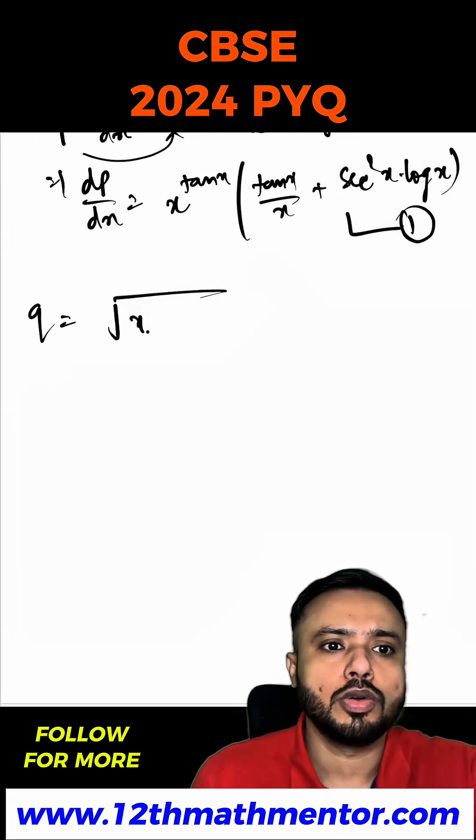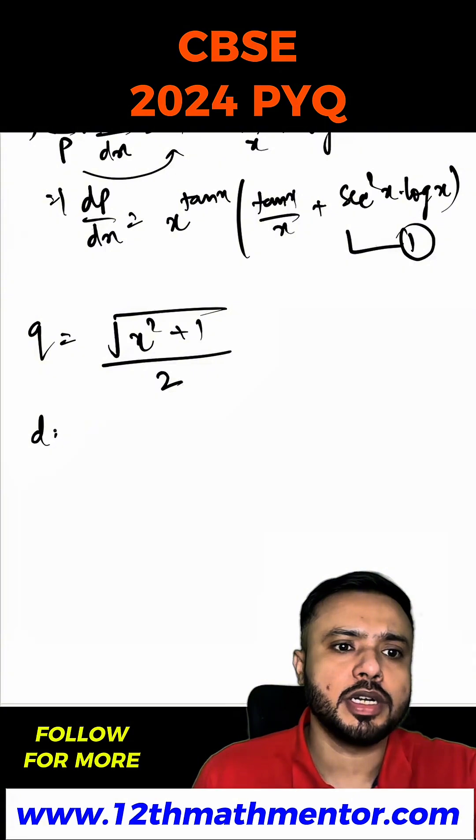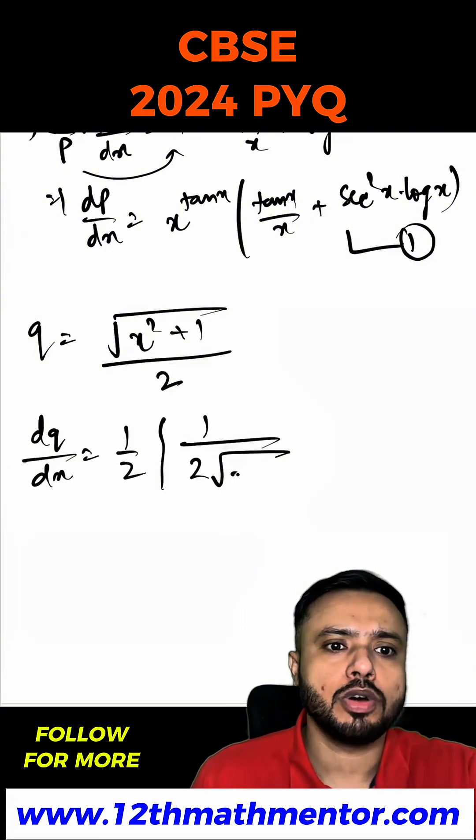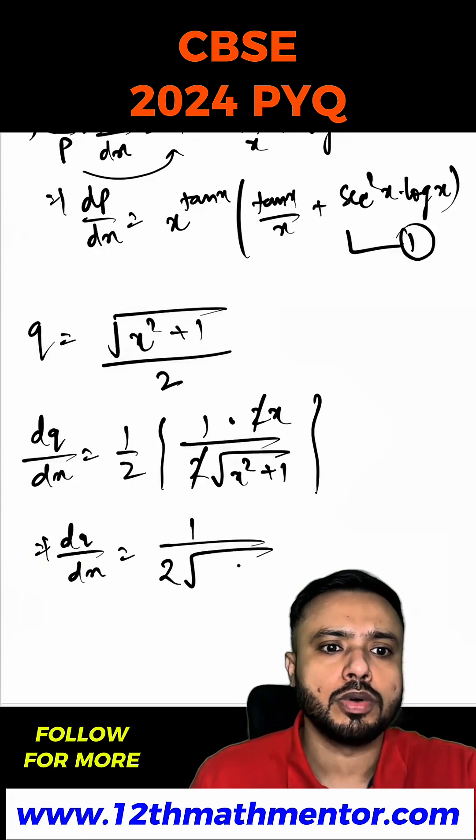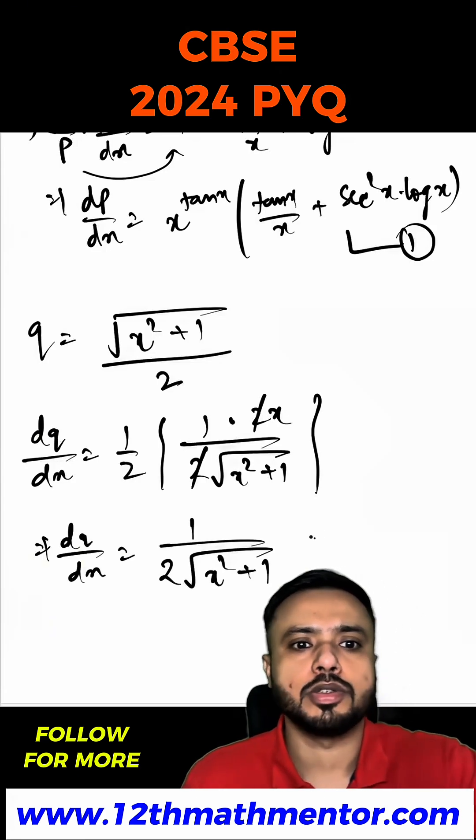Now my q was √(x² + 1)/2. We can directly differentiate it. So dq/dx would be equal to 1/2, 1/(2√(x² + 1)), and the derivative of x² + 1 would be 2x. I have used chain rule here. So this 2 and 2 cancel out. So dq/dx would be equal to x/(2√(x² + 1)). This is my equation 2.